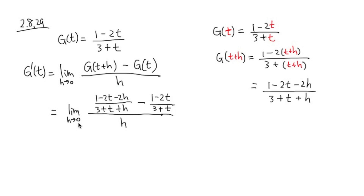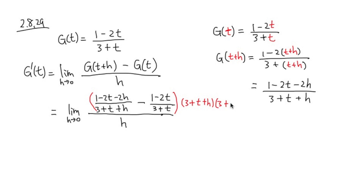The limit as h approaches 0: we have g of t plus h in the numerator, minus our original function g of t, all over h. We have a complex fraction, and the way to deal with a complex fraction is to multiply the top and bottom by the LCD. The denominators we have are 3 plus t plus h and 3 plus t, so those are what we need to multiply by.